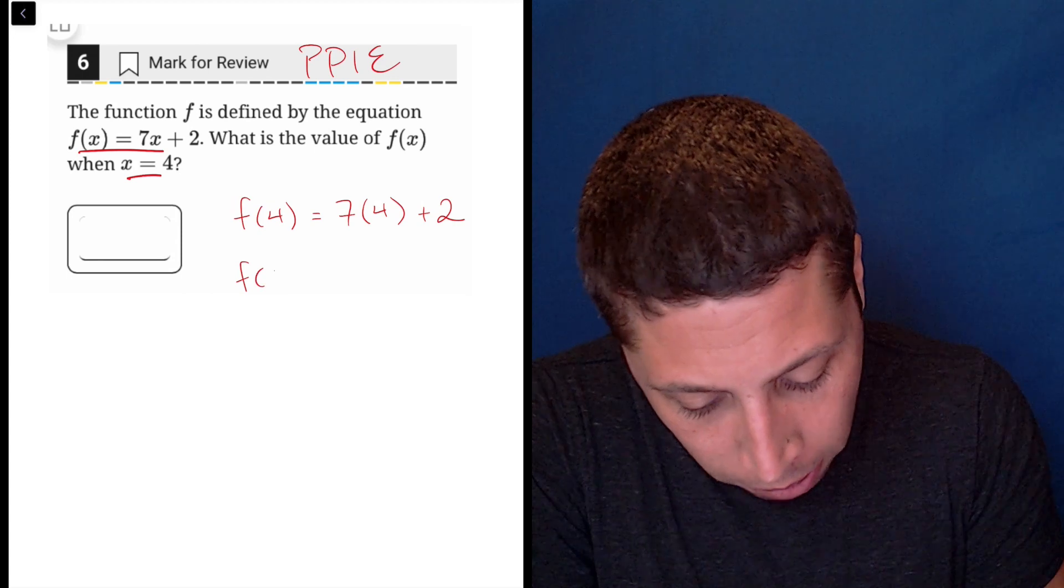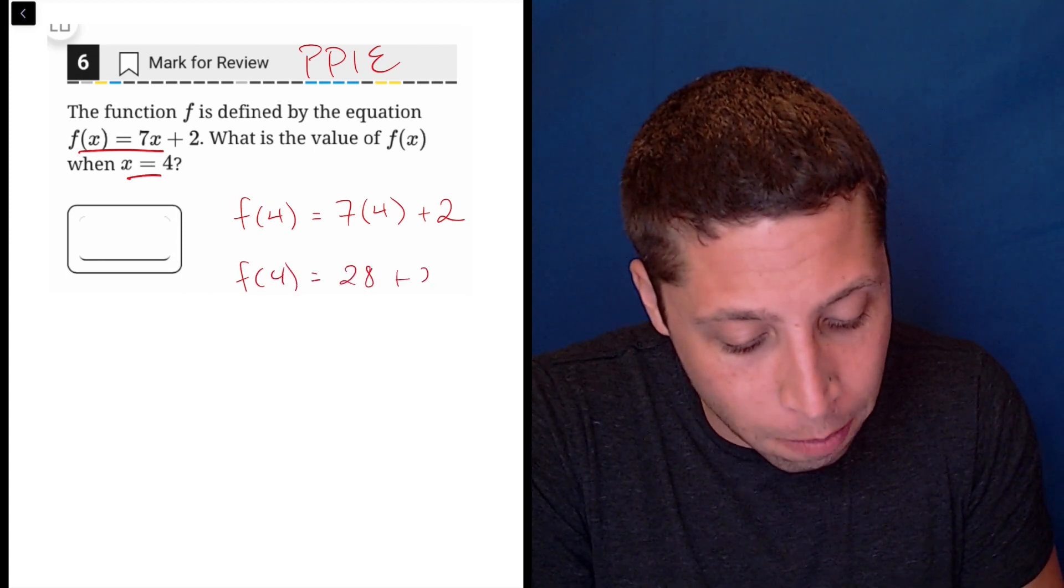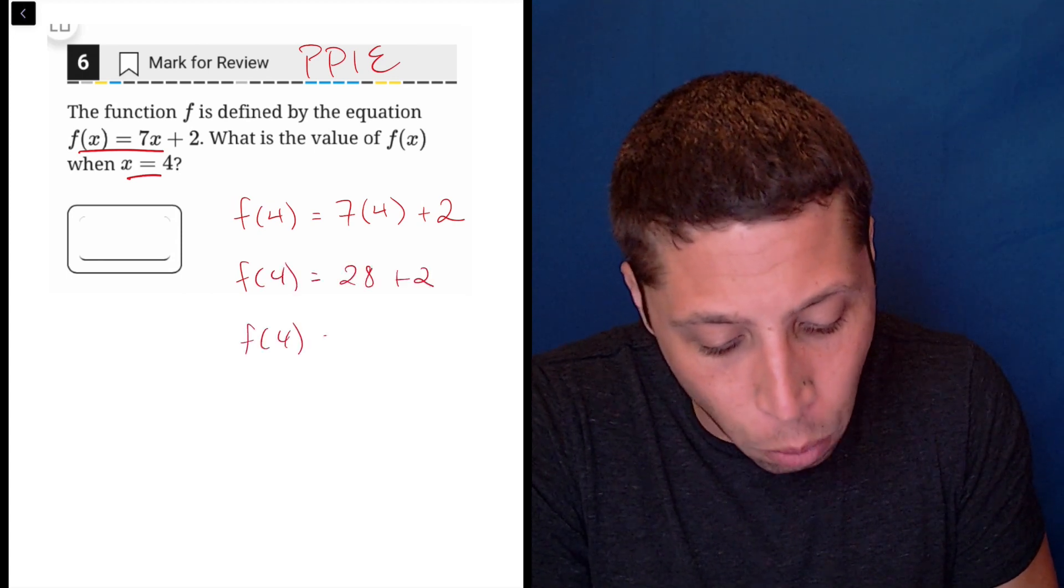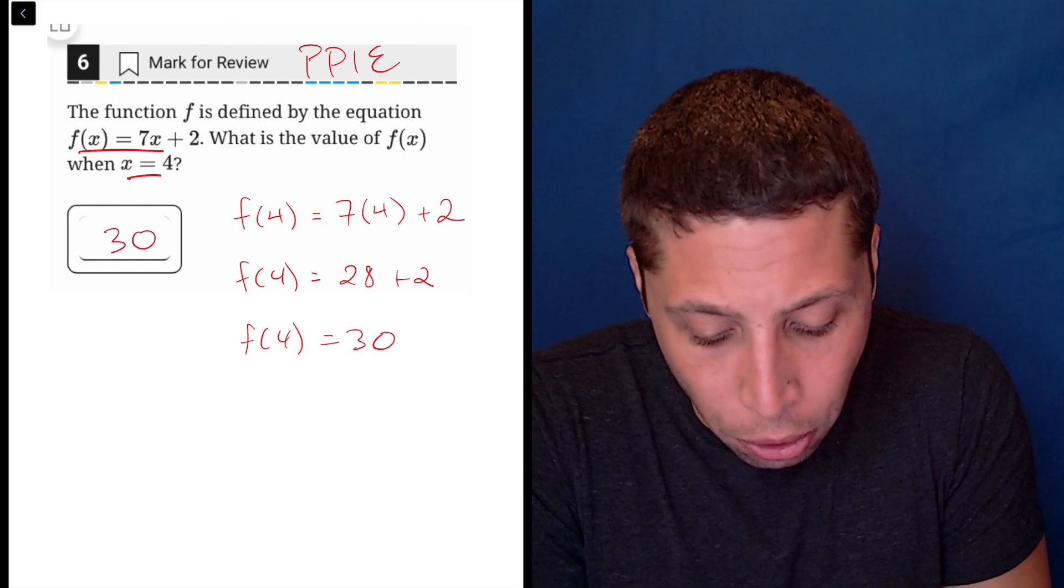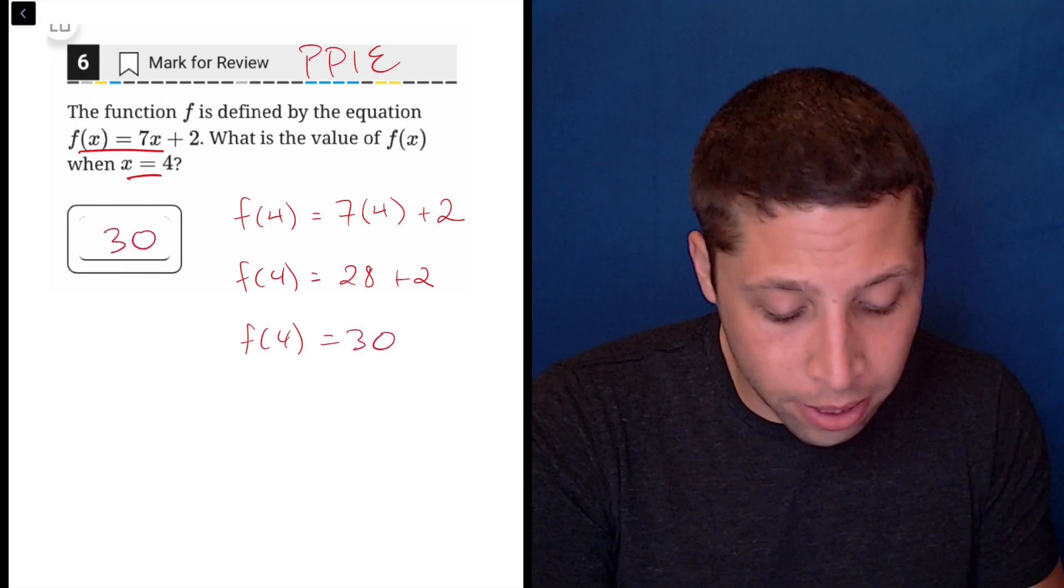So f(4) is going to be 7 times 4 is 28 plus 2. So f(4) is 30. So 30 is our answer. And just to clarify what we found, this is a point.